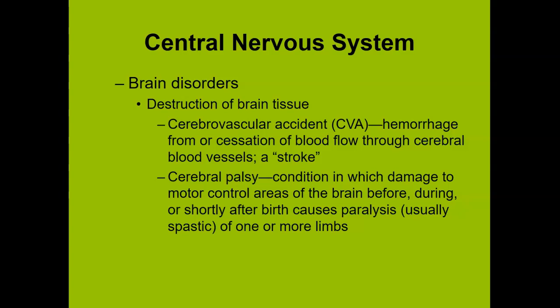A CVA usually happens in cerebral blood vessels. Cerebral palsy happens when the motor part of the brain — the neurons controlling skeletal muscles — gets damaged. It usually happens shortly after birth, sometimes because the baby doesn't start breathing quickly enough or is somehow injured. This causes long-term paralysis in one or more limbs. If the baby is born not breathing, part of the motor cortex could die, meaning those neurons won't tell skeletal muscles to contract, and the muscle just atrophies.